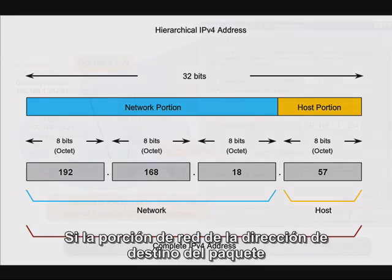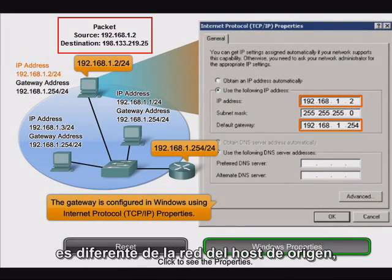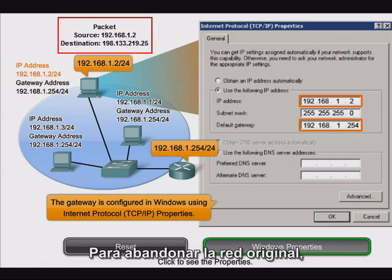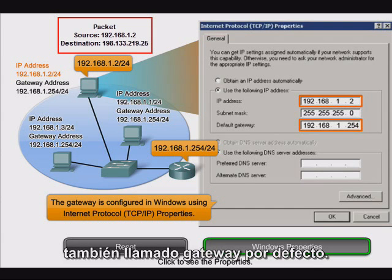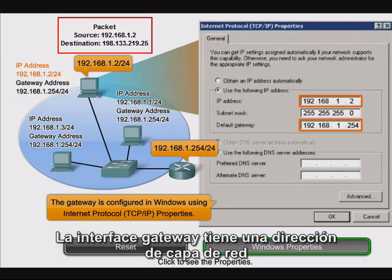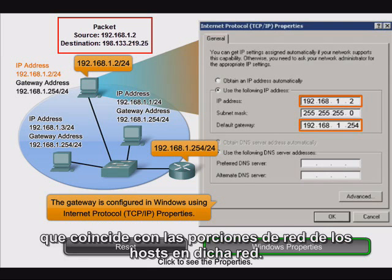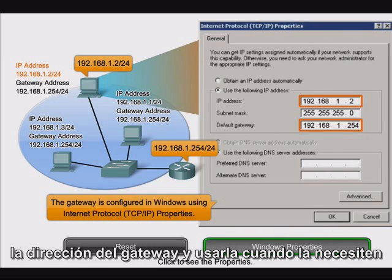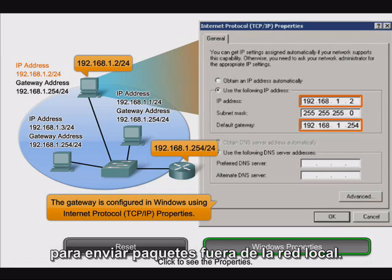If the network portion of the destination address of the packet is different from the network of the originating host, the packet has to be routed outside the original network. In order to leave the original network, the packet is sent to a gateway, also sometimes called a default gateway. This gateway is a router interface connected to the local router. The gateway interface has a network layer address that matches the network addresses of all the hosts in that network, and the hosts are configured to recognize it as the gateway address and use it any time they need to send packets outside of the local network.